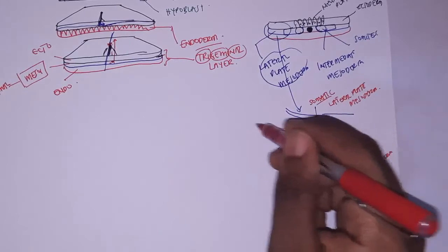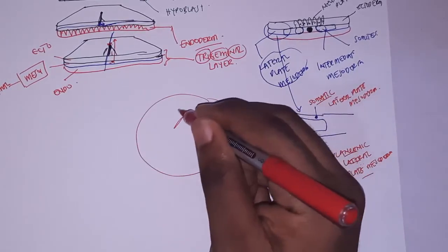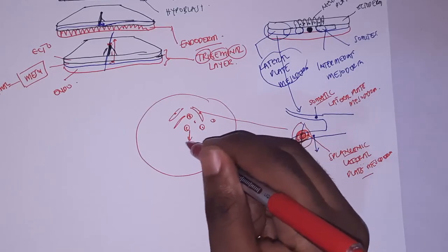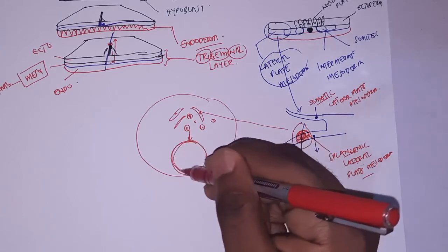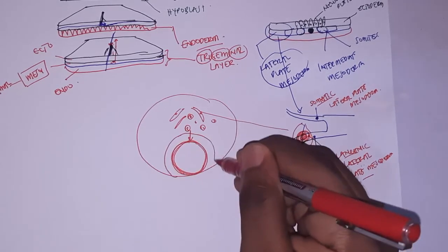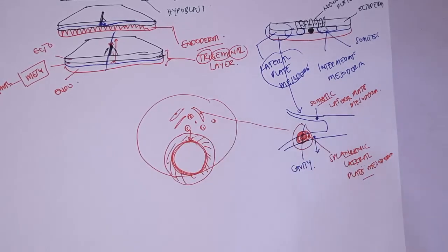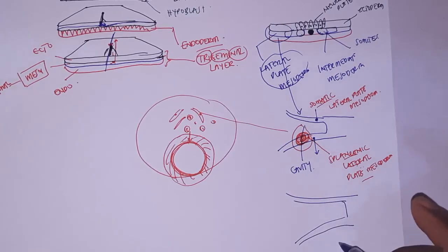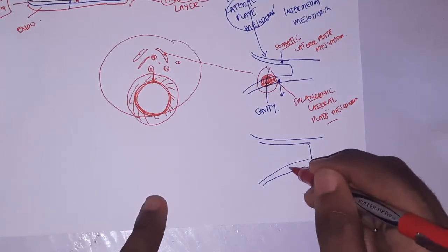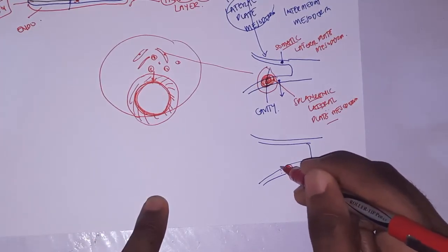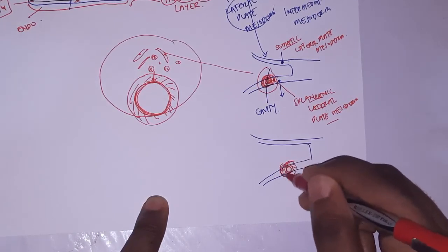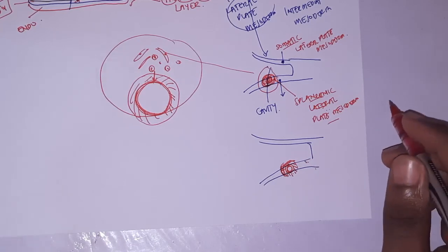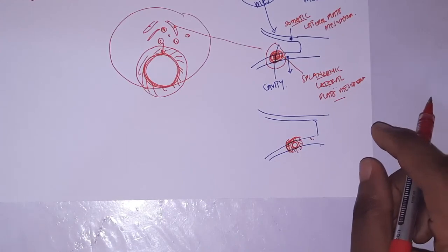Zooming further into this area, myoblasts form along with blood cells in the splanchnic lateral plate mesoderm. Eventually these will develop into a tube — a specialized tubular structure made up of these specialized cells. This tube within the splanchnic lateral plate mesoderm represents the early cardiac development.